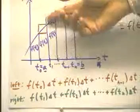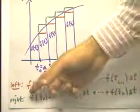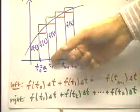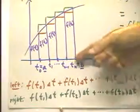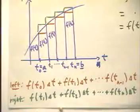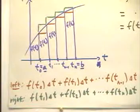When we do the right handed areas, we're going to have f of t1 delta t first, because that's the right hand of the first trapezoid. And we're going to go all the way up to f of tn delta t. So make sure we understand that notation.